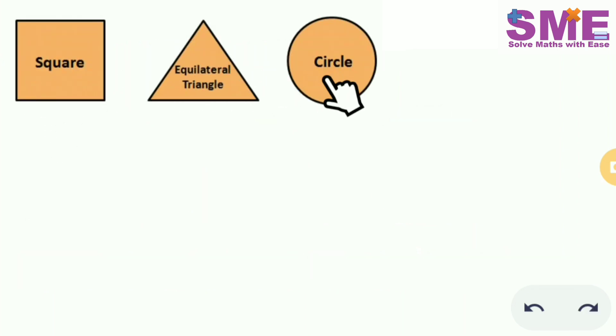So here we have the three figures. Let the side of the square be equal to s, the side of an equilateral triangle be equal to a, and the radius of the circle be equal to r.